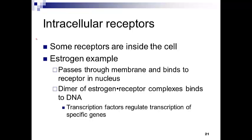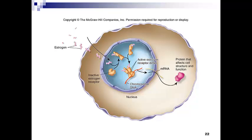We've talked a lot about receptors on the cell surface with extracellular and intracellular domains working together. But what about receptors that are inside the cell? The only way to get a receptor already in the cytoplasm to respond is to have a signal that can diffuse through the membrane. These must be small, lipid-based molecules. Estrogen is a great example — a lipid-based hormone able to pass through the cell membrane and bind to its receptor in the nucleus.